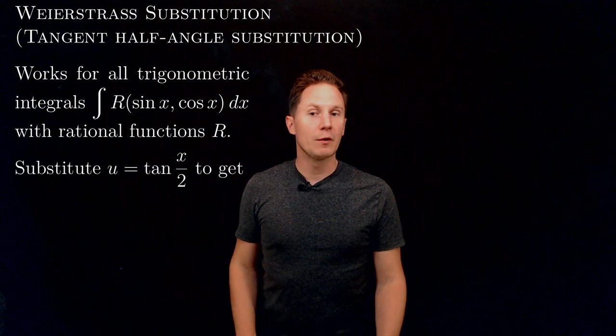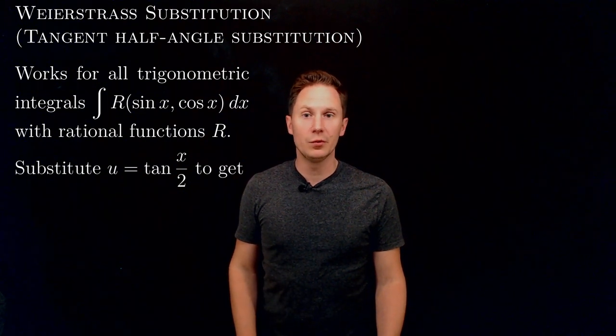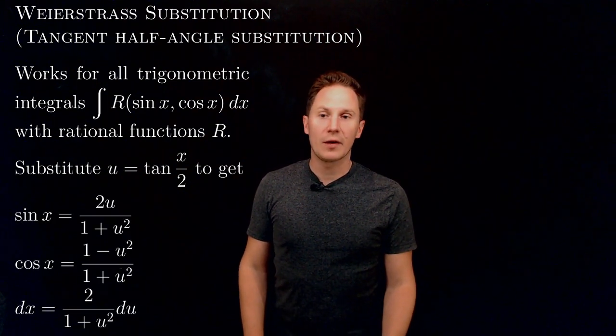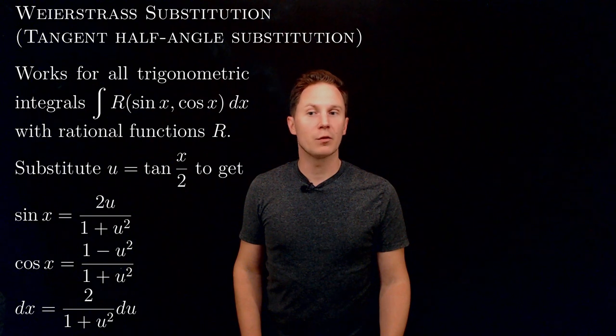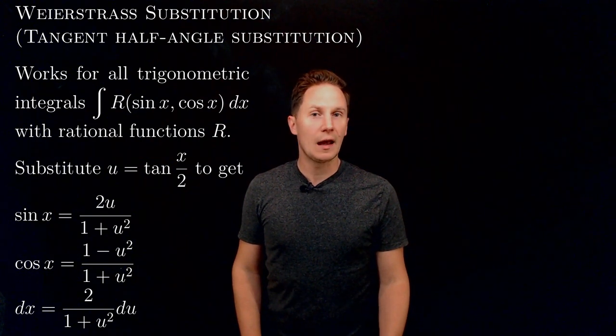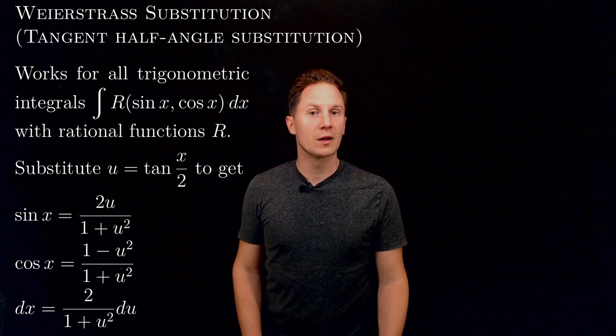By substituting u = tan(x/2), we get sin x = 2u/(1 + u²), cos x = (1 - u²)/(1 + u²), and dx = 2/(1 + u²)du.